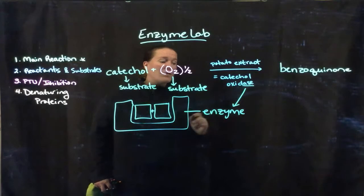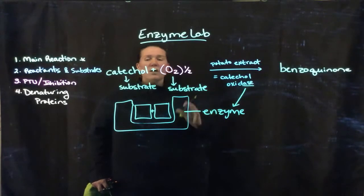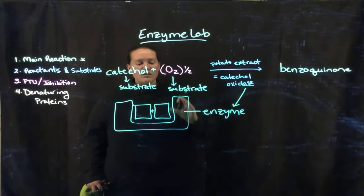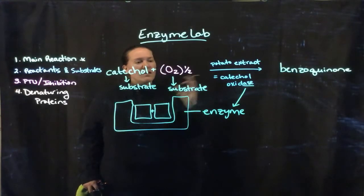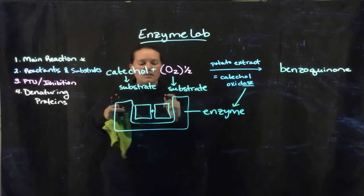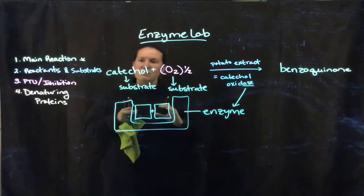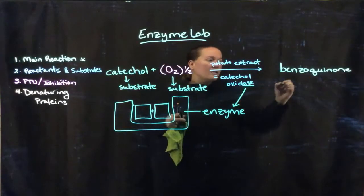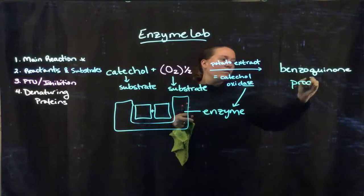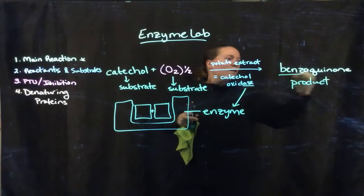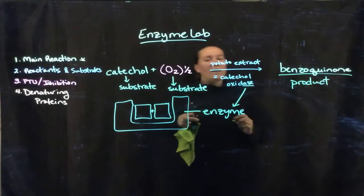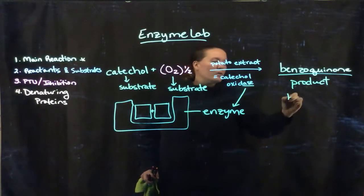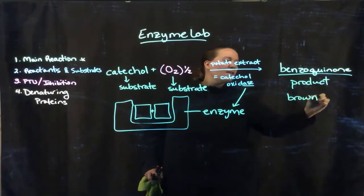What the enzyme actually is, is a really complicated protein structure. It grabs on to the substrates and glues them together for a cheaper energy cost. Our product over here is benzoquinone, and what that means to us is a brown pigmentation.